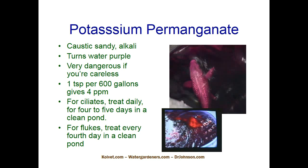Potassium permanganate in facilities so large that even a gallon of formalin/malachite isn't enough — that's when you'd look at potassium permanganate, based on the fact it is very inexpensive. It is a dark purple powder, and when you put it in the water it turns pink while active. Once it has spent its energy on the parasites, it turns to an amber or tea color. Make a note: if you treat with potassium permanganate and the water turns brown and cloudy, you've got a major water change to do. That usually means the pond or tank started out way too dirty.